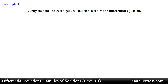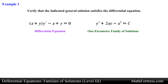Verify that the indicated general solution satisfies the differential equation. The differential equation is the quantity (x + y) times y prime minus (x + y) equals 0, and the one-parameter family of solutions to verify is y squared + 2xy minus x squared equals c. Similar to the way we verified particular solutions, we need to find the derivative of this general solution implicitly. For this differential equation we need to find the first derivative.